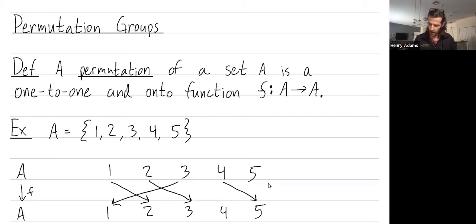At this point, the only place 5 could go is back to 4. So this is a permutation. It's one-to-one because different elements go to different spots.